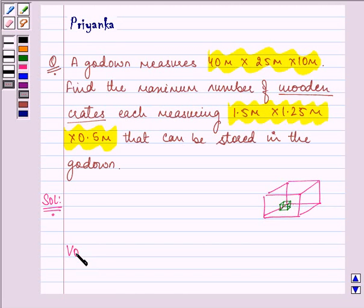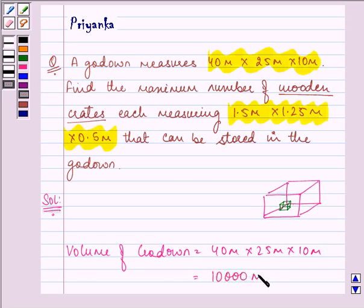Volume of godown will be equal to 40 meters into 25 meters into 10 meters. It will be 10,000 meter cube.